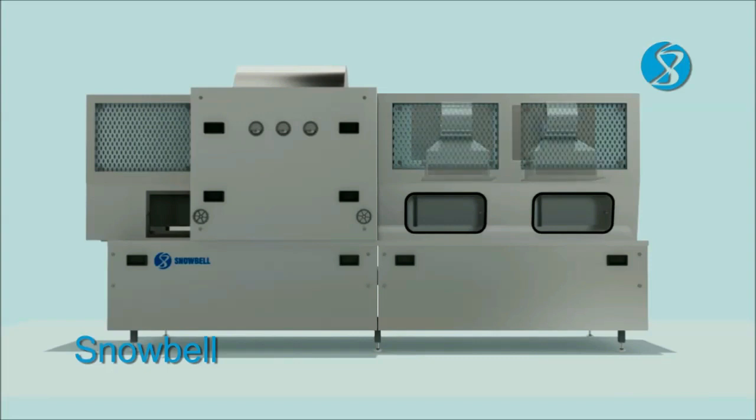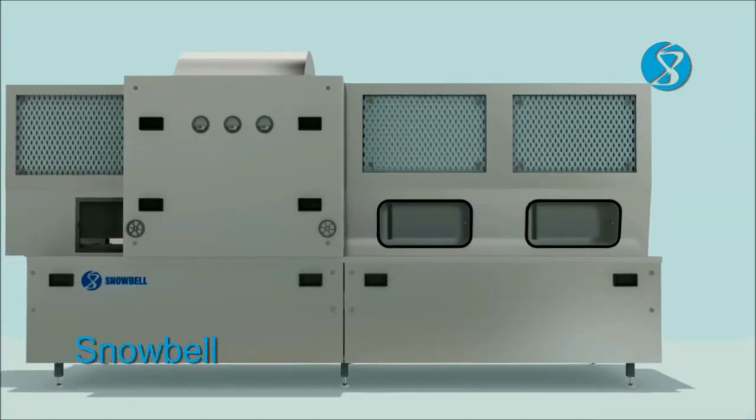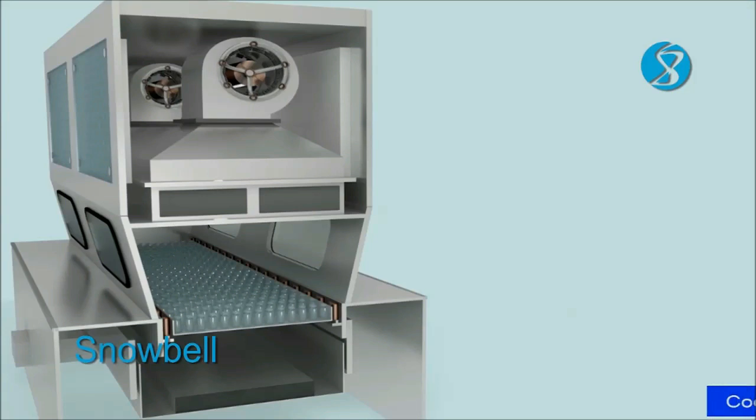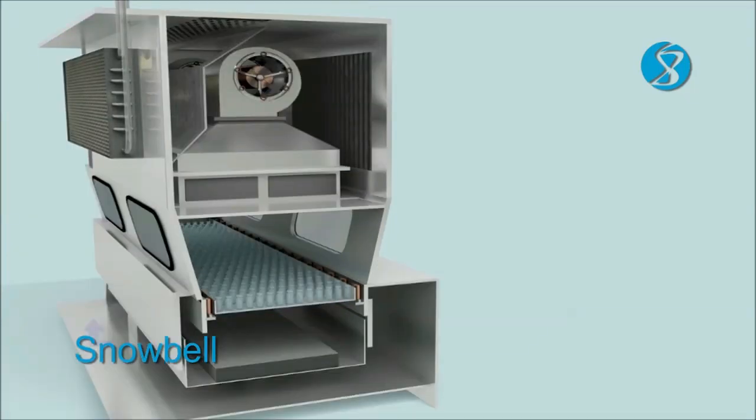Vials on exiting the sterilizing zone enter the cooling zone. Cool air is sucked in by a fan and discharged through high-efficiency sub-micron particulate air filters with vertical laminar downflow onto the vials. The recirculating fan in the cooling zone carries the warmed-up air underneath the cooling zone conveyor through a pre-filter and a cooling coil back to the cooling zone.